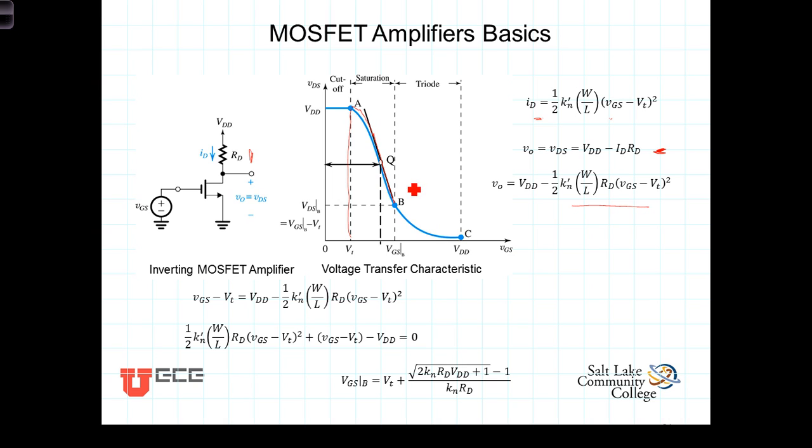As you can see here in the graph, even though it's quadratic, there's a portion of the curve that is relatively linear centered around this bias point Q. Our objective will be to bias the transistor at a DC point Q with a DC value of VGS and a corresponding VDS, and superimpose a relatively small time-varying signal on top of the DC bias. By keeping the variations of VGS small, the output VDS will be a relatively linearly scaled version of the input.